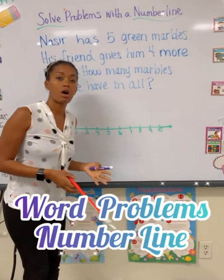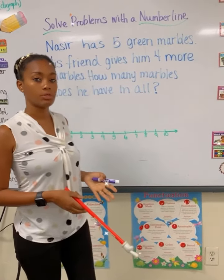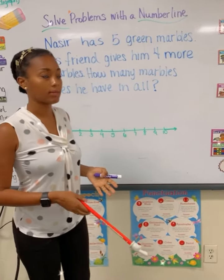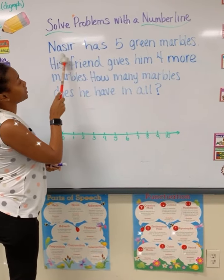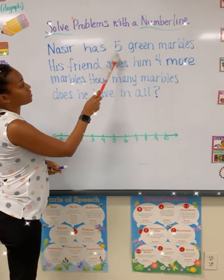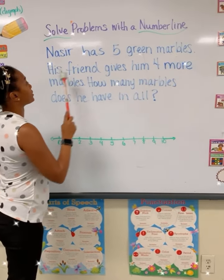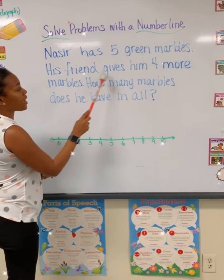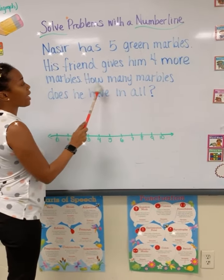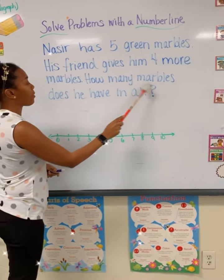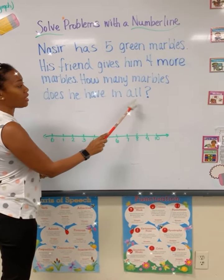Today we are going to solve a math word problem using a number line. Let's read class. The seer has five green marbles. His friend gives him four more marbles. How many marbles does he have in all?